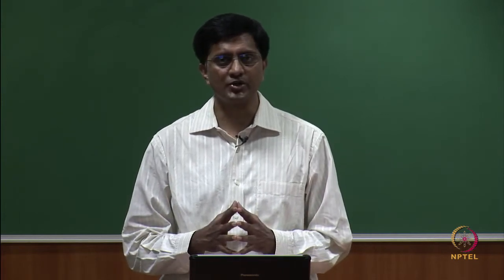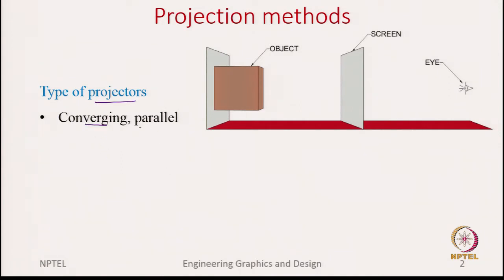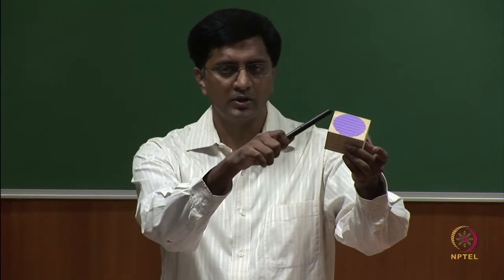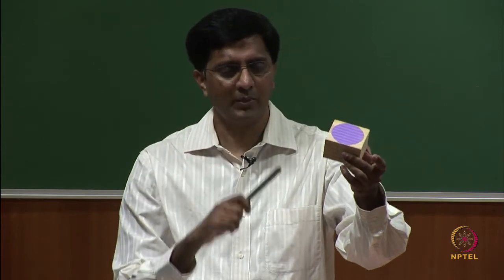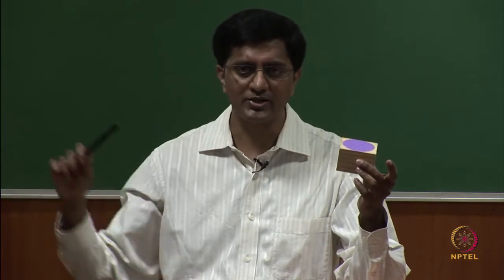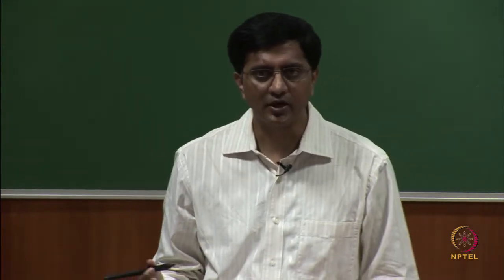Let us review projection methods discussed in week 2. We need three things: the object, the observer, and a projection plane. There are many kinds of projections depending on different aspects. First, depending on the type of projectors, we have either converging or parallel projection lines. If the observer is close to the object, the projection lines all converge into the observer's eye. If the observer is very far, all projection lines are parallel to each other.